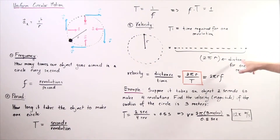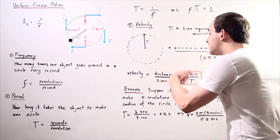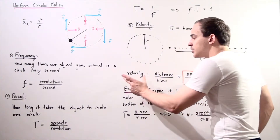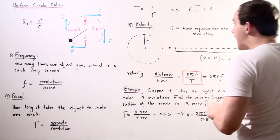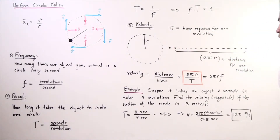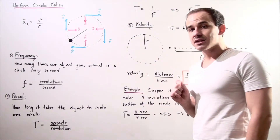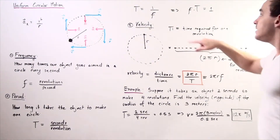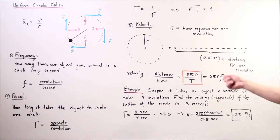This is the distance for one full revolution. Since we're looking for the magnitude of velocity — the speed — we plug 2πr into the distance and the period T into the time. The formula for speed becomes v = 2πr / T. Because T = 1/f, we can also write this as v = 2πr × f, where f is the frequency.